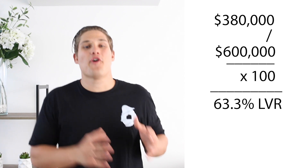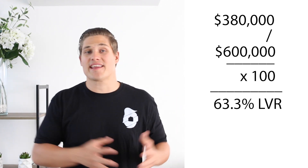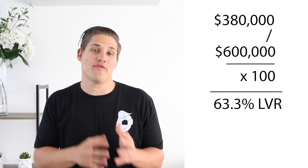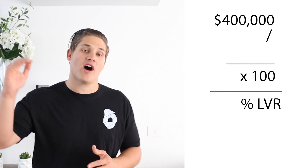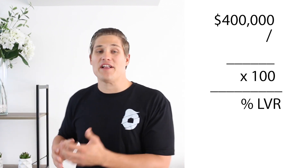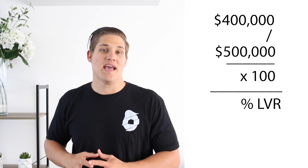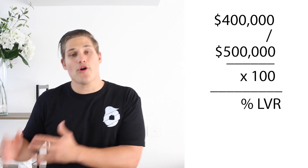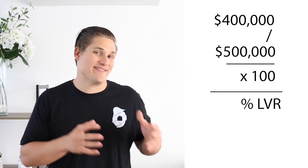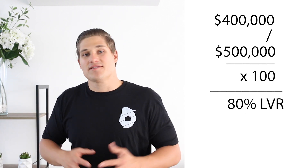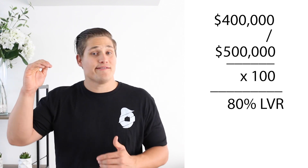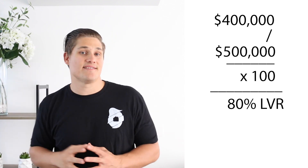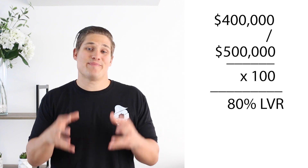Now let's go back to when we first purchased the property three years ago and calculate our LVR back then. Our initial mortgage was $400,000 and our property value was $500,000, giving us a loan to value ratio of 80%. So we can see over time, as the value of our property increases or our debt decreases, our loan to value ratio as a percentage starts to come down.